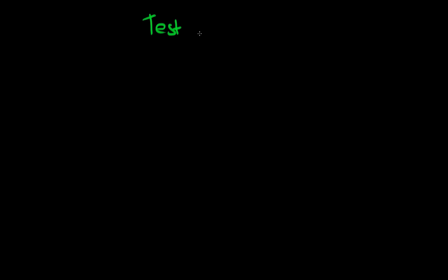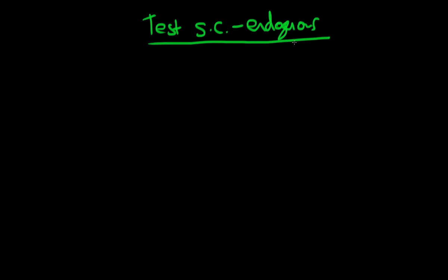In this video we're going to talk about how we go about testing for serial correlation in the presence of endogenous regressors. An example of a typical endogenous regressor might be if we include a lagged dependent variable in our model. The tests which are robust to the presence of endogenous regressors are named after the econometricians Breusch and Godfrey, so it's often known as the Breusch-Godfrey test for serial correlation.